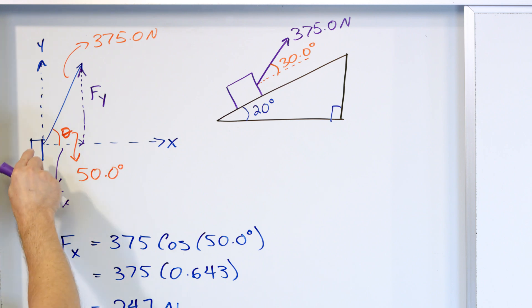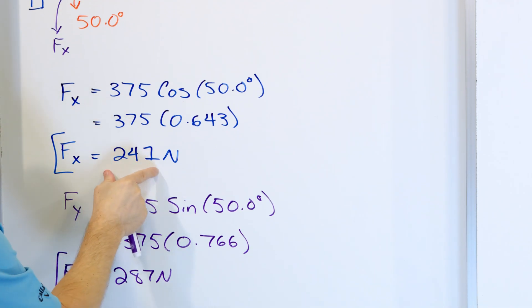But that, the way in which this block moves will be exactly the same as if we replace the force acting the single force with two forces, one acting horizontally, one acting vertically, again on the trunk. The horizontal force will be 241, the vertical force will be 287.